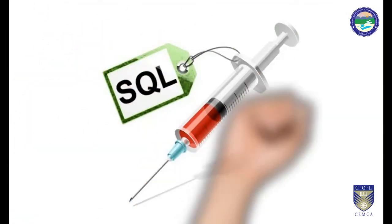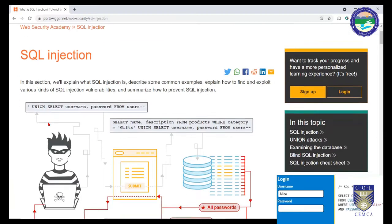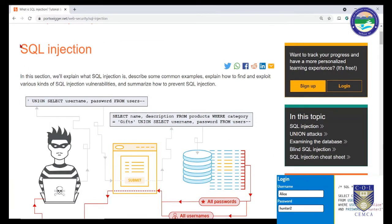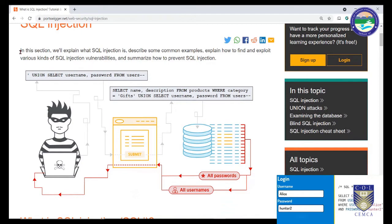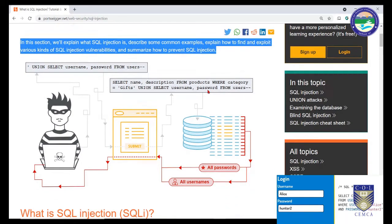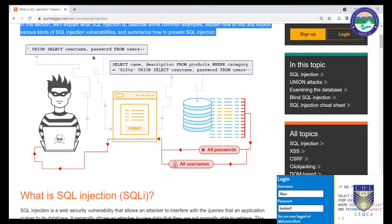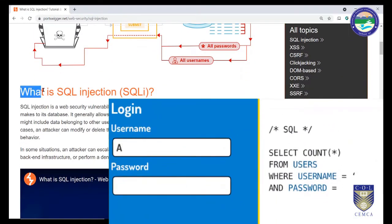Next up, after all the information gathering and vulnerability analysis, we are going to look into how attacks can actually take place. We will look into three attacks: first, SQL injection, then cross-site scripting, and finally DOS attacks. So what is SQL injection? As we all know, SQL is a structured query language.